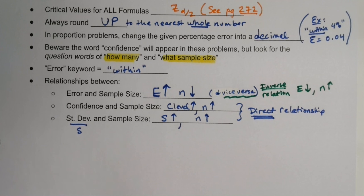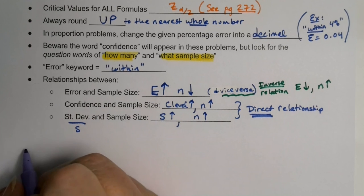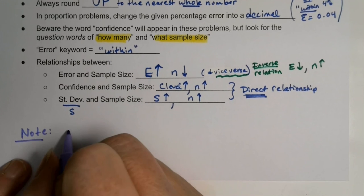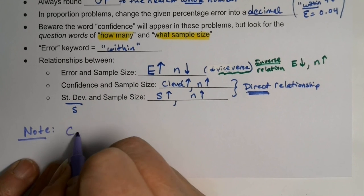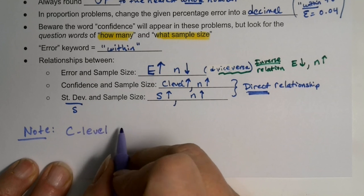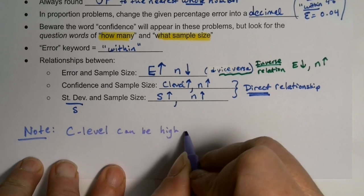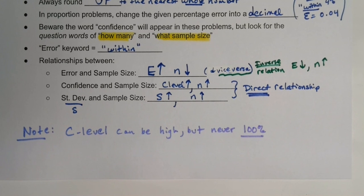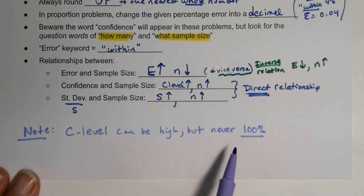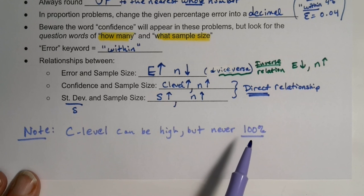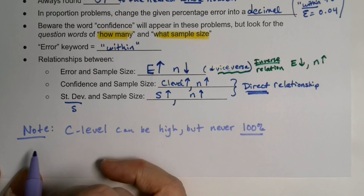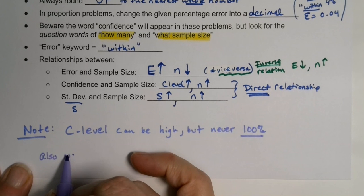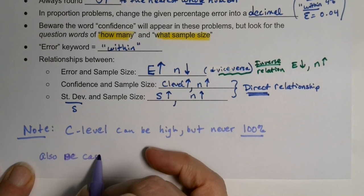One note of caution: your confidence level can be high but can never be 100%. We learned that in chapters 9, 10, and 11. A 100% confidence level is impossible — among other reasons, the probability of a type one error would become zero, which can't happen.